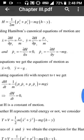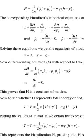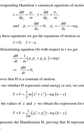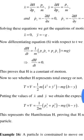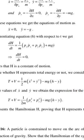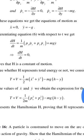The corresponding Hamilton's canonical equations of motion are: ẋ = ∂H/∂Px = Px/m, ẏ = ∂H/∂Py = Py/m, Ṗx = -∂H/∂x = 0, Ṗy = -∂H/∂y = -mg. Solving these equations we get: ẍ = 0, ÿ = -g.